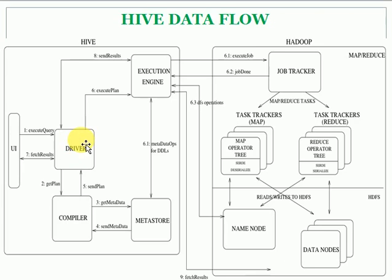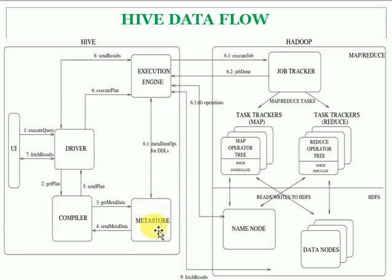The Hive driver validates the query and sends it to the compiler to prepare an execution plan. The compiler needs to understand whether the tables and structures you are querying exist — that is the metadata. So the compiler requests metadata from the metastore. In Hive, we store metadata in the metastore. The compiler requests table, column, and all detail information from the metastore. The metastore sends this metadata back to the compiler, which then sends the execution plan to the driver. The driver then executes the plan on the execution engine.